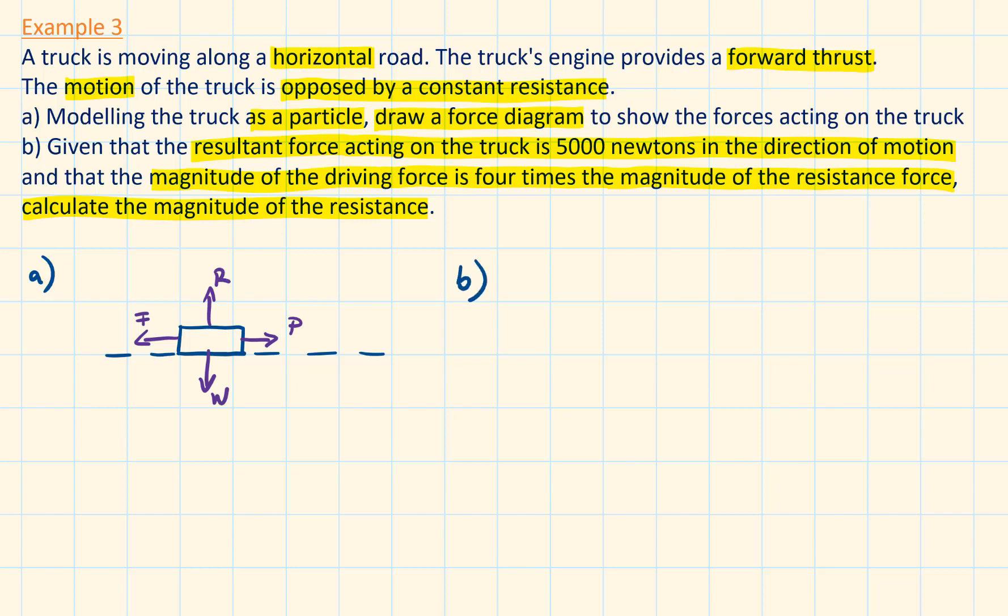Given that the resultant force acting on the truck is 5000 newtons in the direction of motion, we can write this as P minus F is equal to 5000 newtons. We also know that P is equal to 4 times F. Replacing the values we have 4F minus F is equal to 5000. With this we have calculated the magnitude of the resistance force. Capital F is equal to 1666.6 newtons.